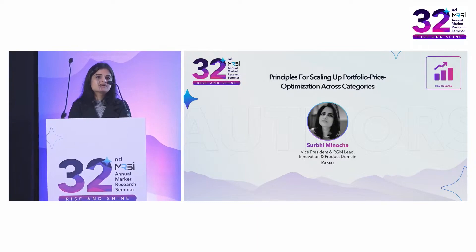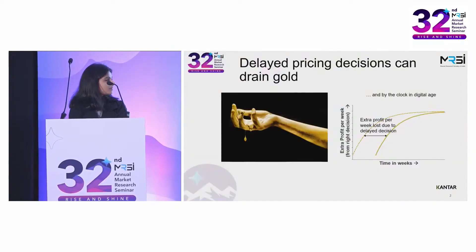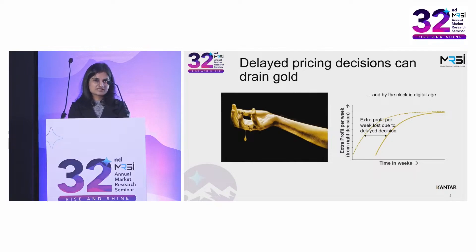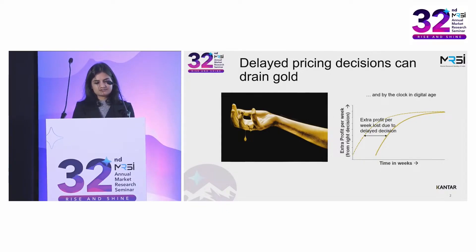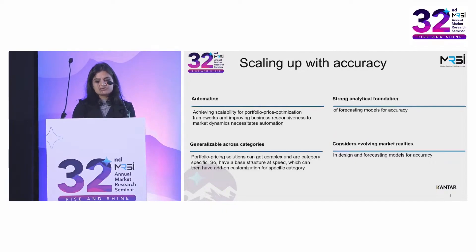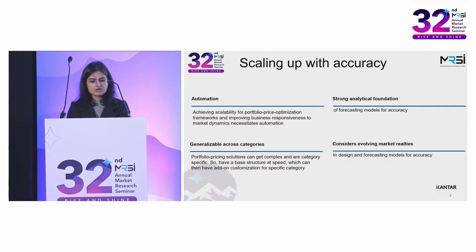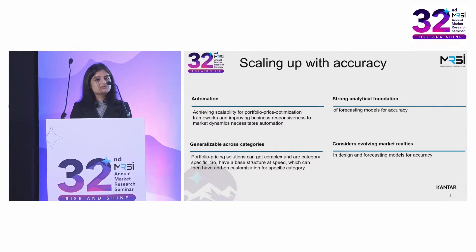But before getting into this, let us first understand why we need this. The delay in taking the right pricing decisions can actually drain out profits, and it can drain out at speed in the digital age. The diagram shown here basically illustrates that had the decision been taken a couple of weeks before, then extra profits could have actually been captured. So for market researchers to help businesses make faster decisions at scale, it requires automation of portfolio price optimization frameworks and their generalizability across categories.